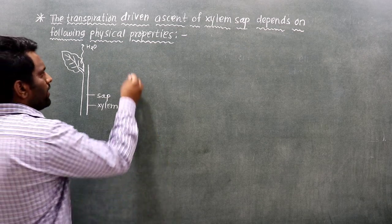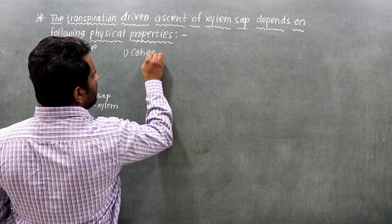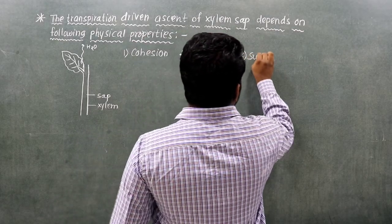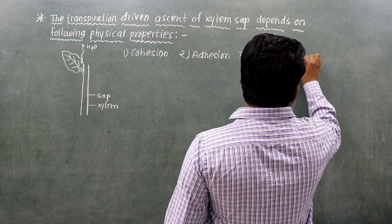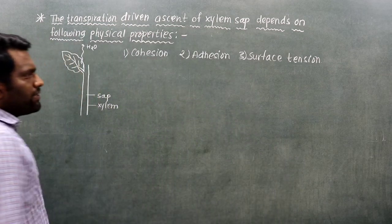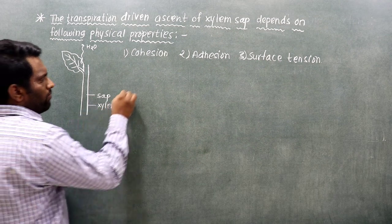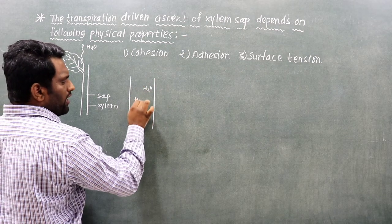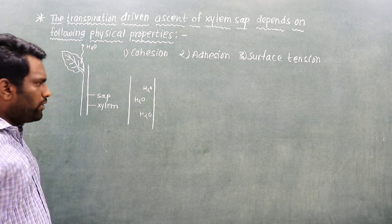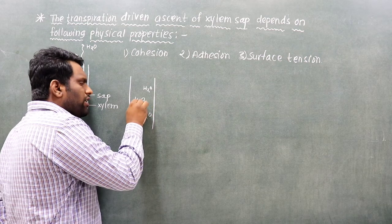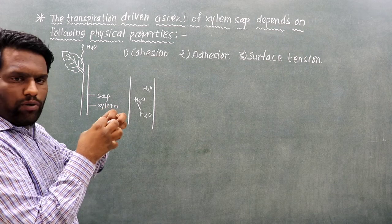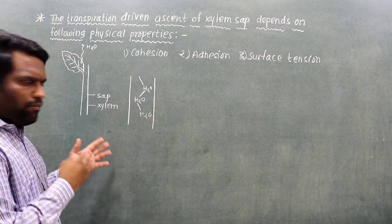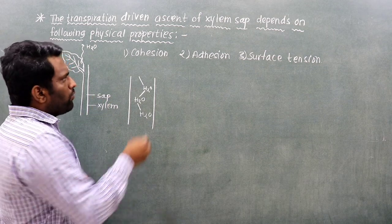There are three properties involved. The first property is cohesion: water molecules attract each other through mutual attraction — hydrogen bonding between water molecules. This mutual attraction between water molecules is called cohesion, and it forms a continuous water column.